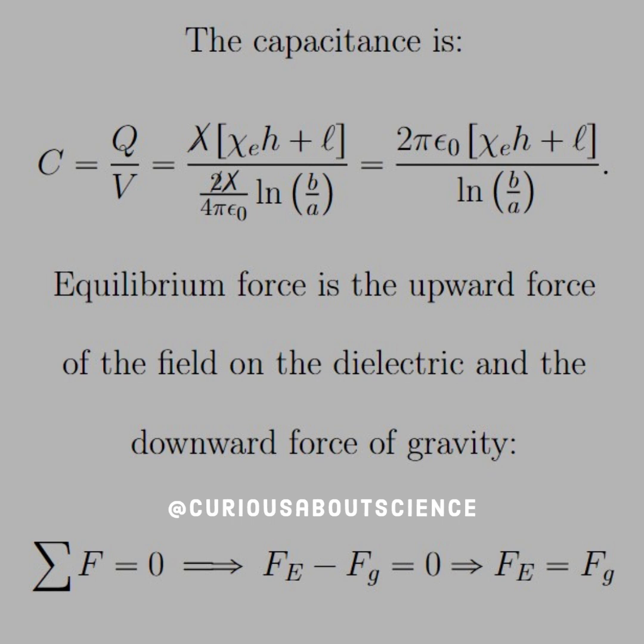Therefore, the force of the field going up minus force of gravity equals zero, which implies that the field force has to equal the gravitational force. From here, it's just a matter of substituting in the correct things and applying them appropriately.